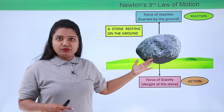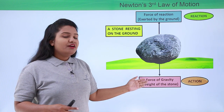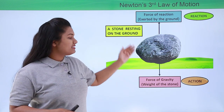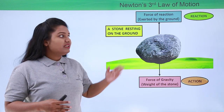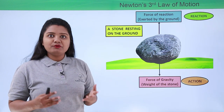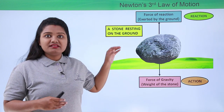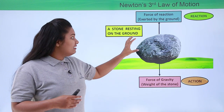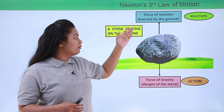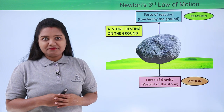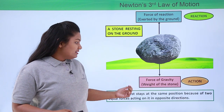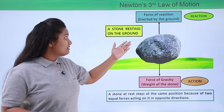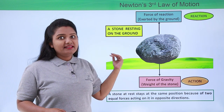The net force acting on this stone is zero since these two forces acting on the stone add up to zero — they are equal in magnitude and opposite in direction. That is the reason why this stone is not digging into the earth and moving inside. It stays at the same position because these two forces balance each other, and the stone stays at rest.